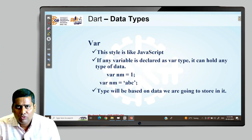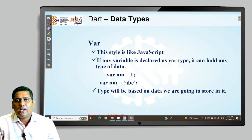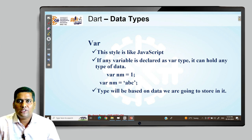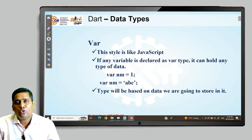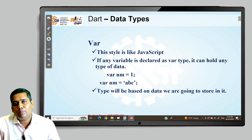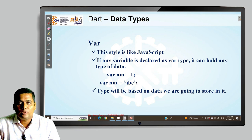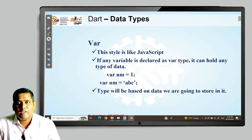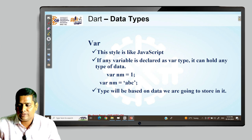The var data type is like JavaScript — if any variable is declared as var, it can hold any type of data. It depends on what type of data you are storing; var takes that type automatically. So the type will be based on the data you are going to store in it.